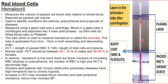Hematocrit is significant because it helps in the prognosis of diseases like anemia and polycythemia. In anemia, hematocrit is low since there are fewer circulating red blood cells, whereas in polycythemia the number of red blood cells is high and hematocrit is abnormally high. Smokers and patients with chronic obstructive pulmonary disease also have high hematocrit, due to chronic hypoxia — that is, low levels of oxygen circulating in the blood.